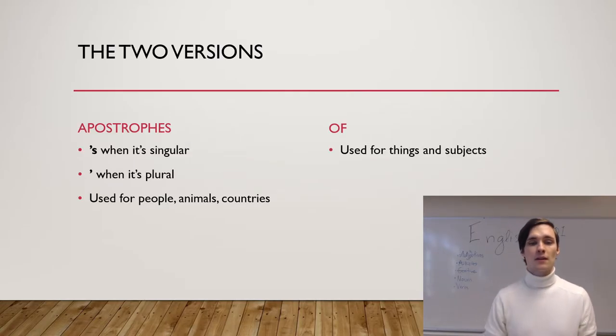Basically we have two versions of the genitive. It doesn't get a lot simpler than that. On one side we have the apostrophe, and on the other hand we have the word 'of.' So apostrophe over here: when it's singular you use the apostrophe and the S, and when it's plural you just use the apostrophe. It is used for people, animals, and countries.